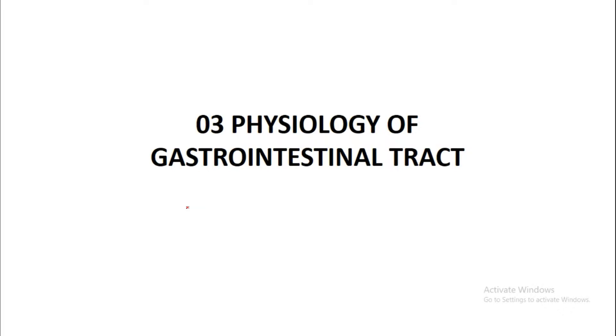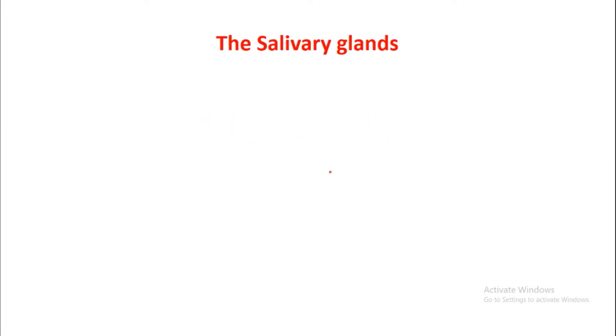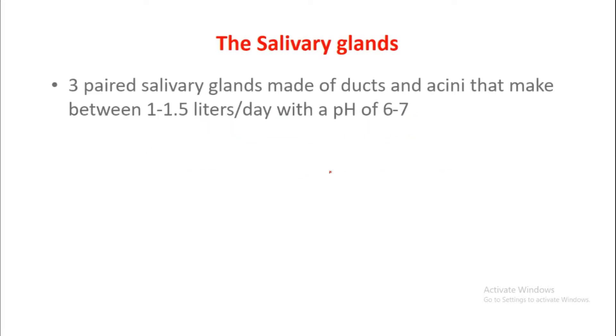Today we begin with the physiology of the gastrointestinal tract, covering saliva and the salivary glands. There are three paired salivary glands made up of ducts and acini that produce between 1 to 1.5 liters per day of saliva with a pH of 6 to 7.